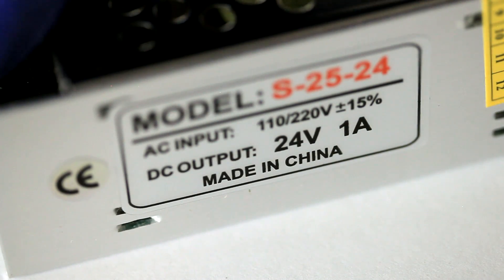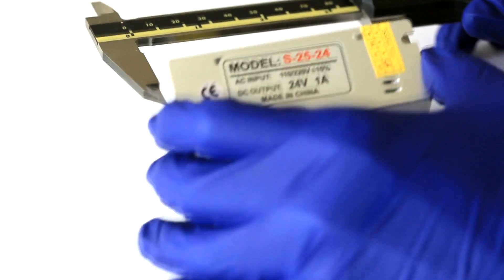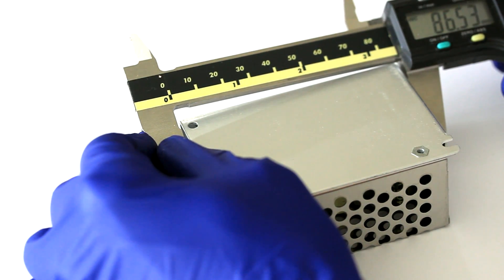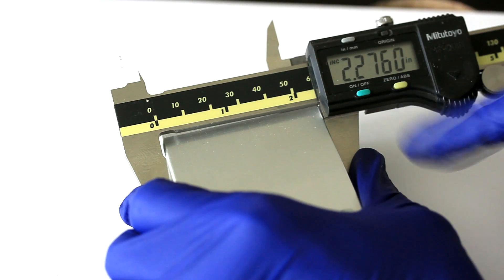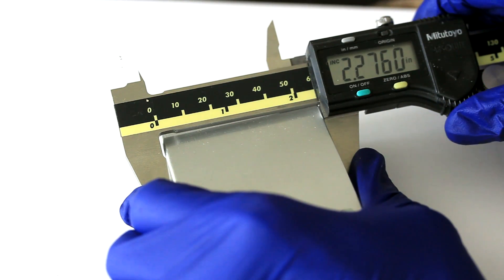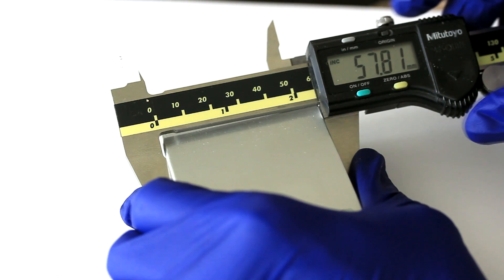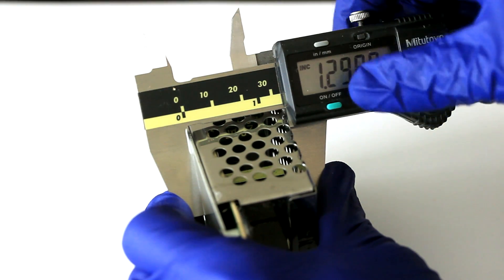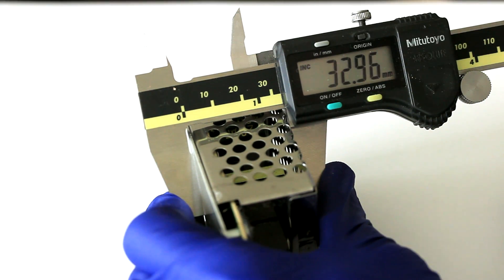The physical dimensions of this power supply are 3.4 inches or 86.54 millimeters by 2.27 or 2.28 inches or 57.81 millimeters by 1.30 inches or 32.96 or 33 millimeters.